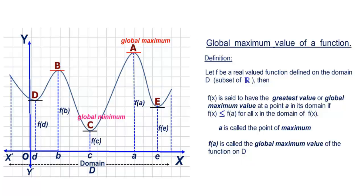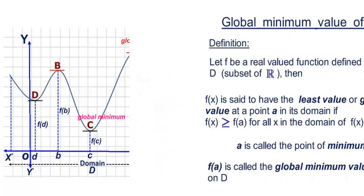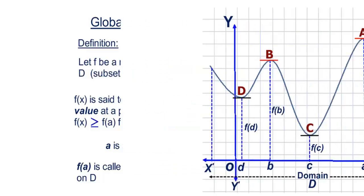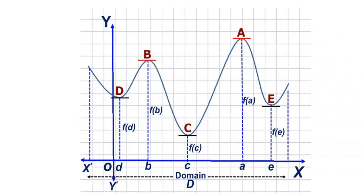Now let us proceed to define the global minimum value of a function. The definition is: let f be a real valued function defined on the domain D. Then f(x) is said to have the least value or global minimum value at a point A in its domain, if f(x) is greater than or equal to f(a) for all x in the domain of f(x). That means all other ordinates must be greater than this ordinate f(a). Then we say f(a) as the global minimum value and A is called the point of minimum.